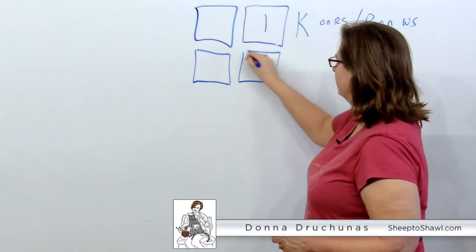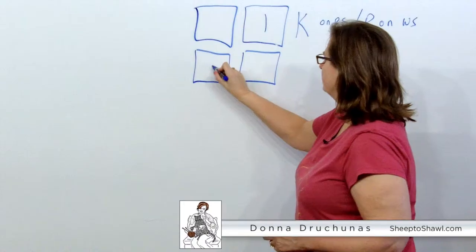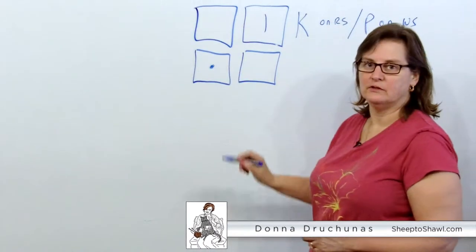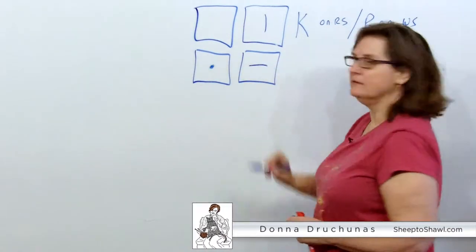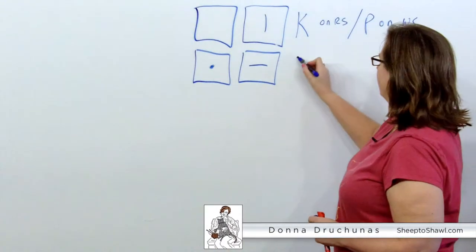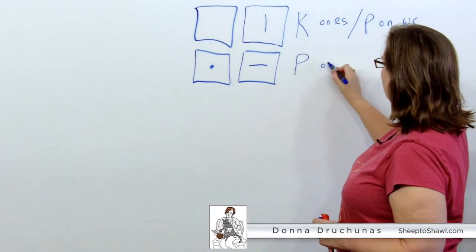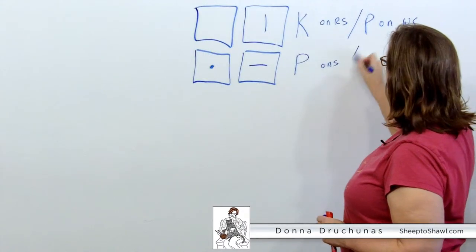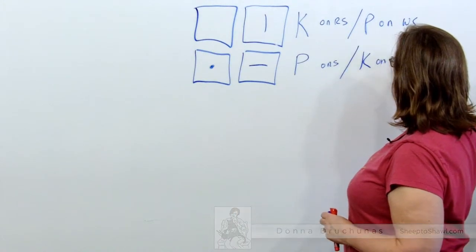Sometimes you see just a dot, and sometimes you see a horizontal line. Again, that's purl on the right side, knit on the wrong side.